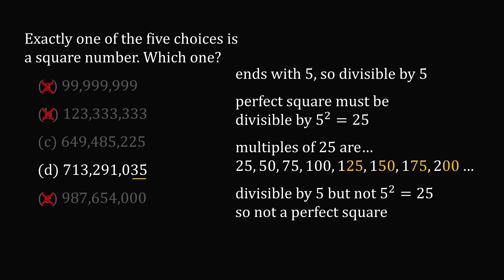So we have option D is divisible by 5, but it is not divisible by 5 squared, which is 25. So we can't have this as a perfect square. We know that D is not a perfect square.